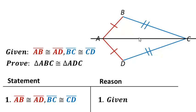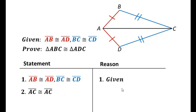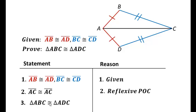Let's take a look at segment AC. Both triangles share this segment, so in our proof we would say that segment AC is congruent to segment AC — that is the reflexive property. Now we have three sets of sides that are congruent, which is all we need. We would then say that triangle ABC is congruent to triangle ADC by SSS.